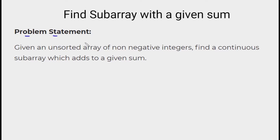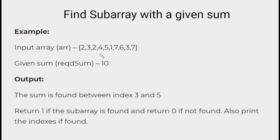The problem statement is that we are given an input array of unsorted non-negative integers and also a sum. Within this array, we have to find a continuous subarray that matches the given sum. Considering this input array, the required sum is given as 10. On scanning this array, we can notice that the elements 4, 5, 1, 1 add to 10, so we have to print the corresponding indexes of these elements: 3 and 5.